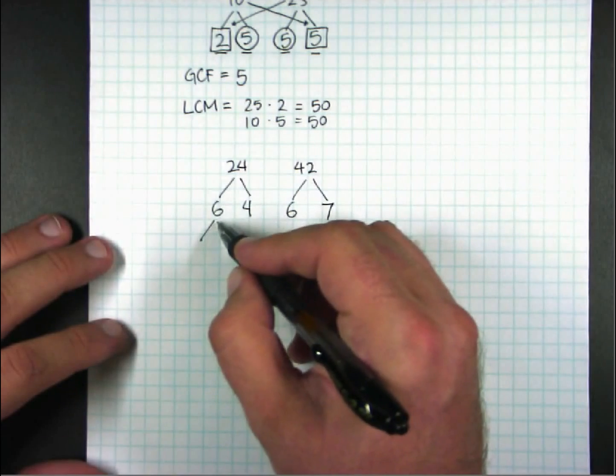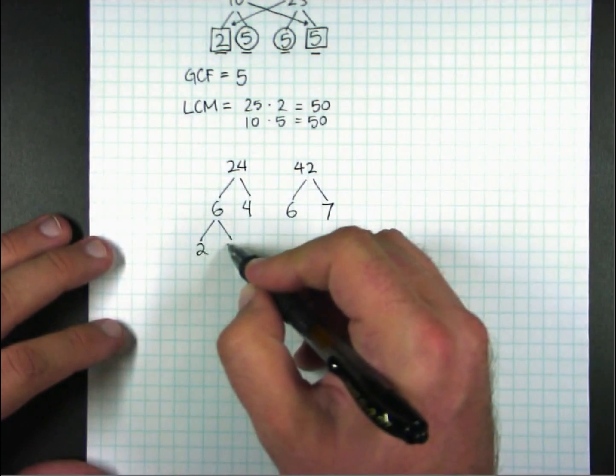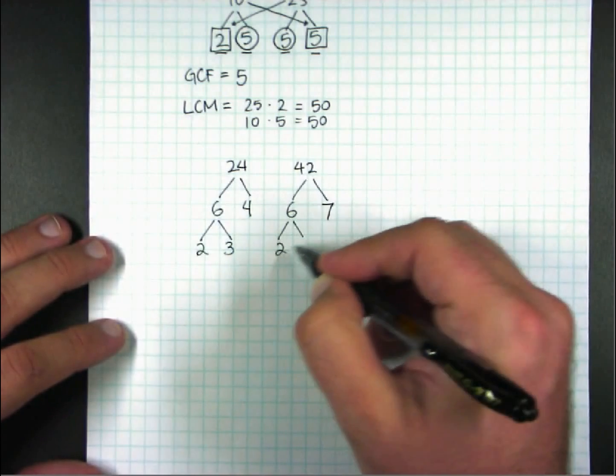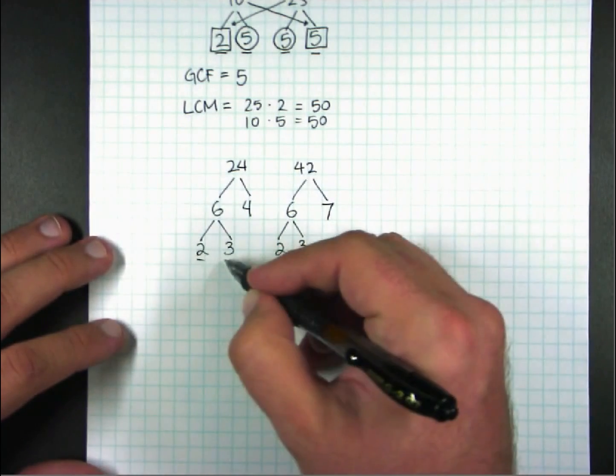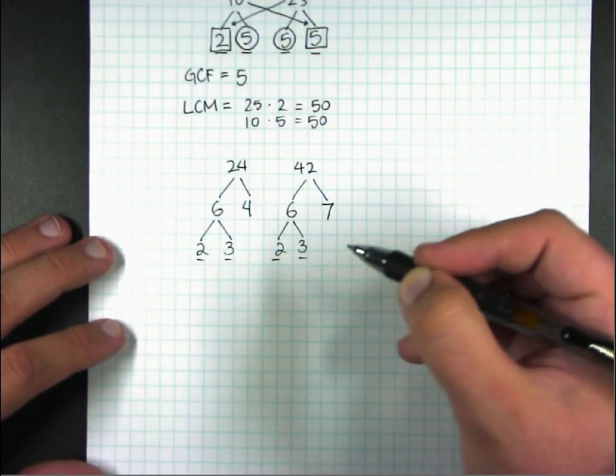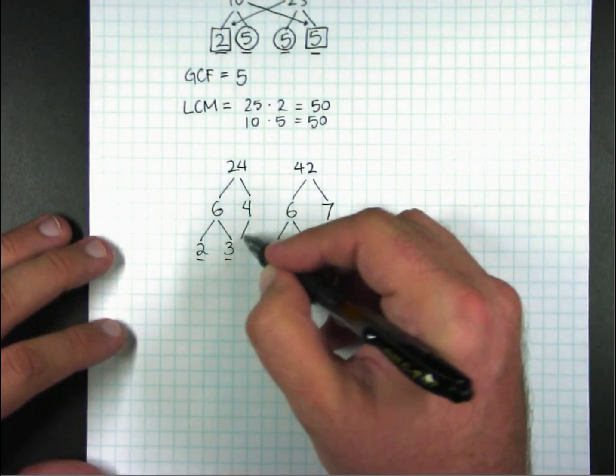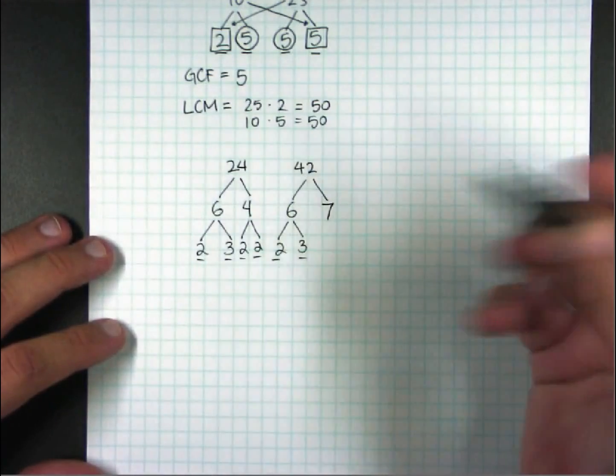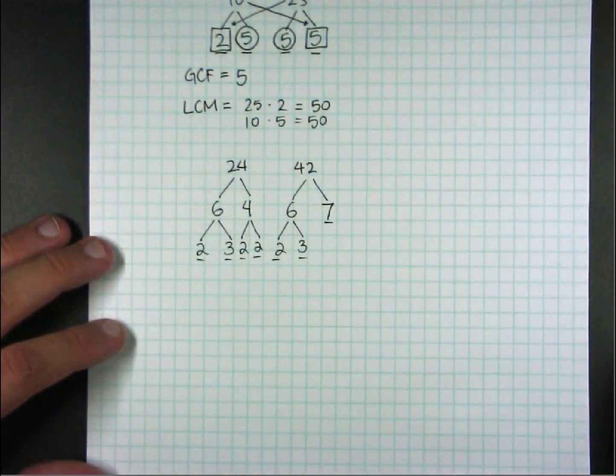I can follow the factor tree further and break this down. 6 is 2 times 3, so I can do that for each one. 2 and 3 are prime. 2 and 3 are prime. 4 factors into 2 and 2, which is prime. And 7 is already prime, so I'm not going to touch it anymore.